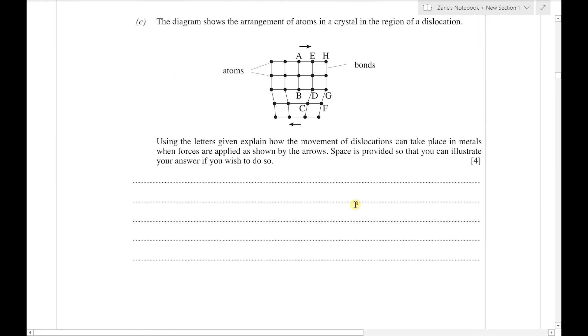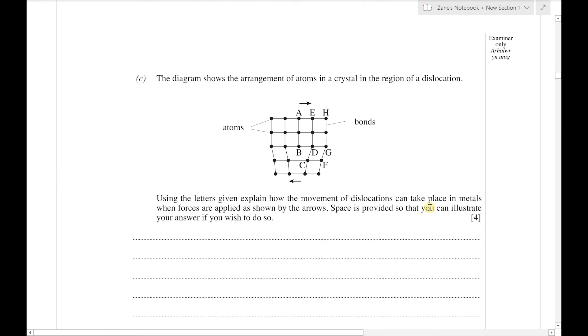On the last part of the question, we've got a diagram—a very standard diagram—showing a dislocation in an arrangement of atoms in a crystal. So the dislocation is this little region underneath the atom that's labeled as B, where there's a gap in the structure, if you like, or an incomplete plane of atoms.